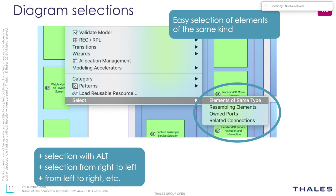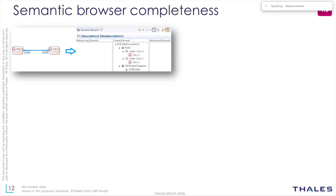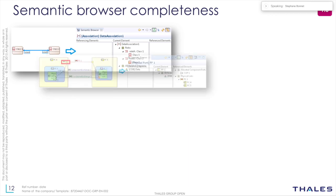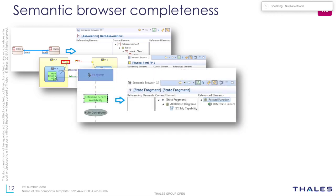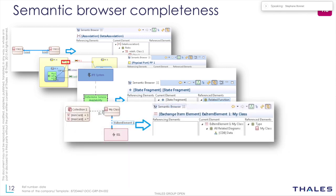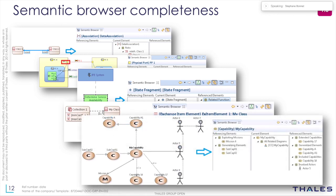The semantic browser has been completed for several elements where queries were missing — for associations in classes, for physical parts in sequence diagrams, for related functions when displaying a function, for relationships between exchange items and data structures, and for capabilities with generalization, inclusion, and extension that were not historically displayed in the semantic browser. All of these have now been fixed.